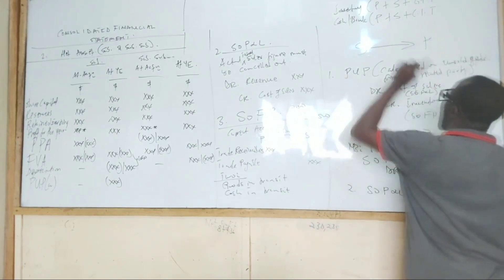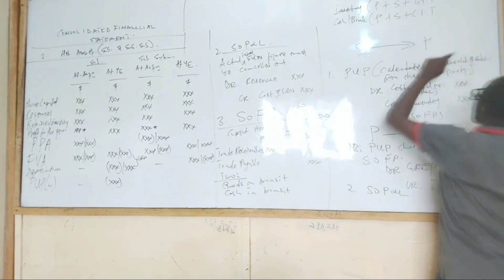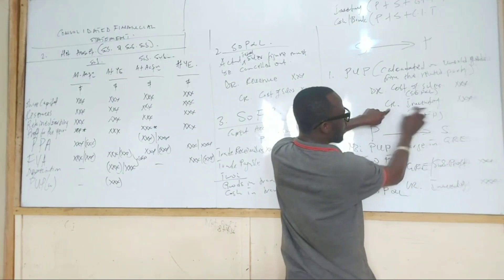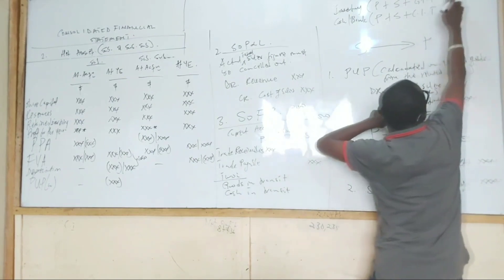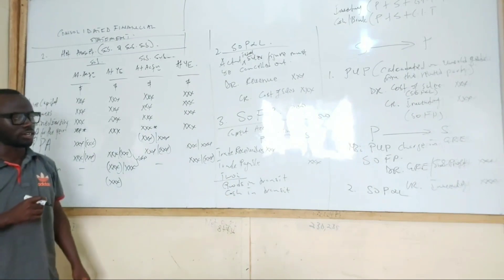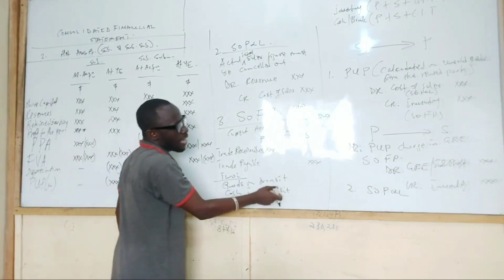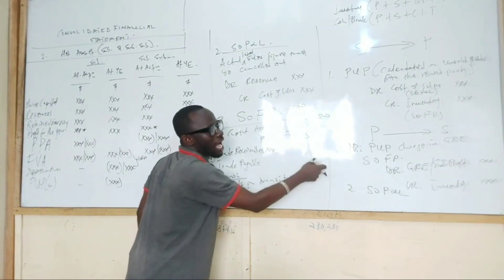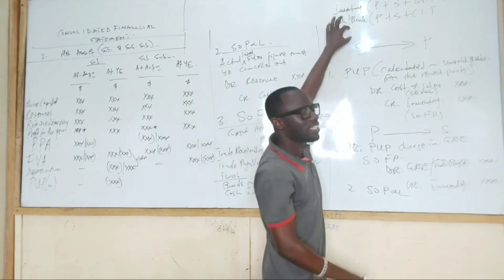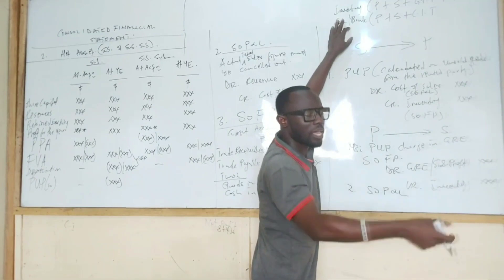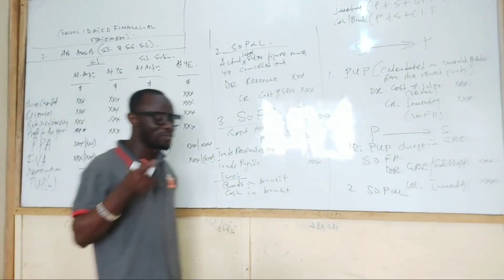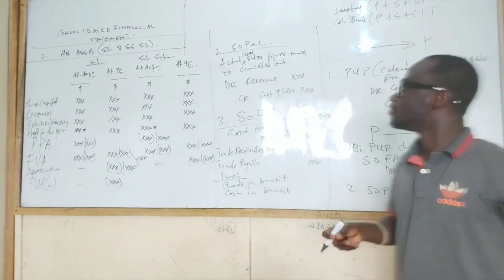Remember, after adding goods in transit to inventory, we will subtract PUP — that is the credit inventory I mentioned. You subtract the provision for unrealized profit. This will adjust the two accounts, and what you get is then used to deduct in trade receivables and trade payables in the consolidated financial statement.